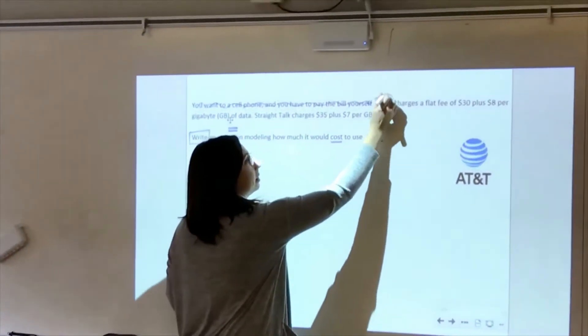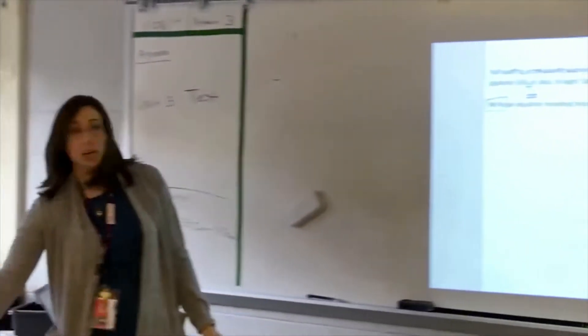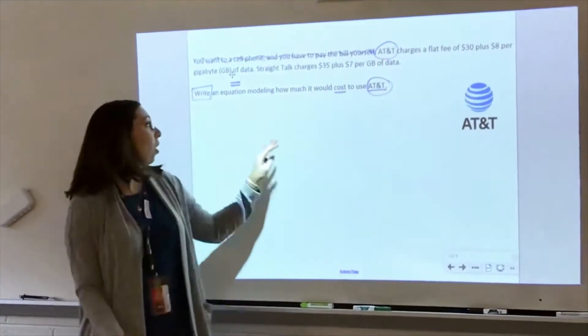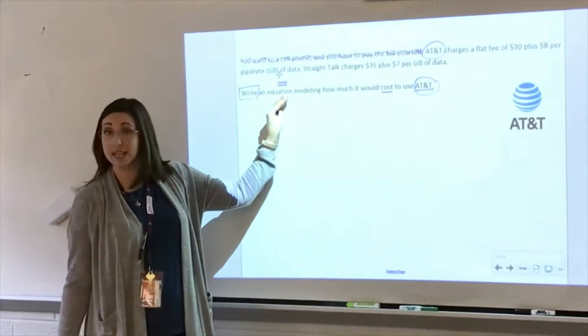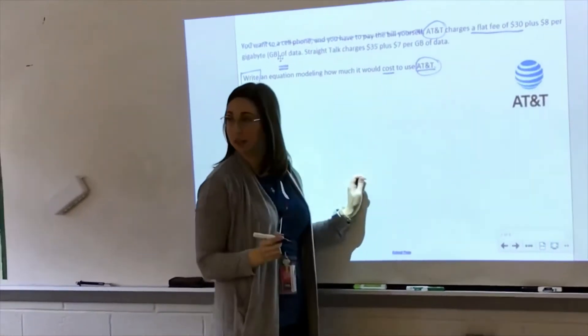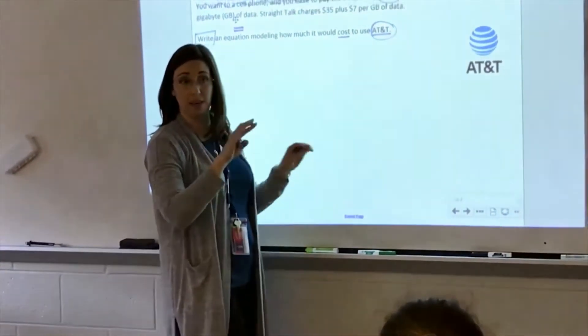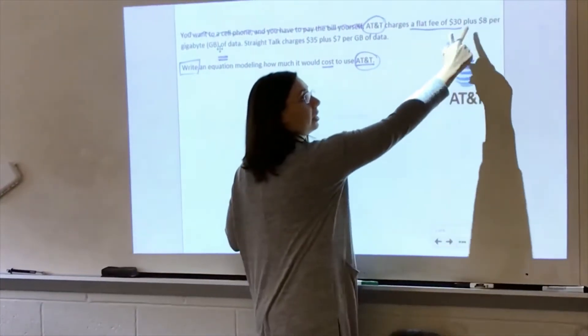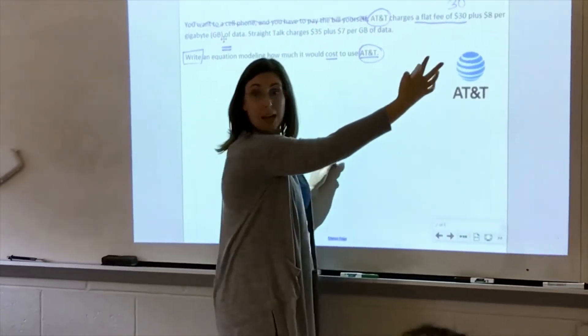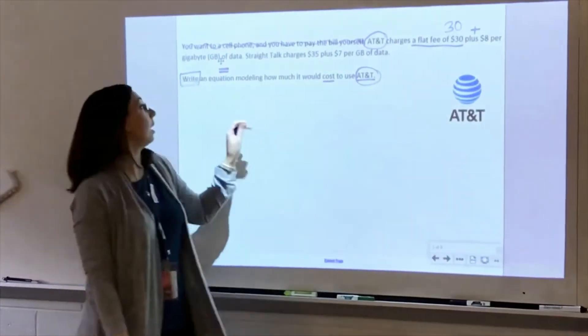Let's talk about AT&T first. So this sentence is saying that AT&T charges $30 plus $8 per gigabyte. If my goal is to write an equation, let's translate. What does it mean when it says a flat fee of $30? How many times am I paying that? Once - flat fee, one and done. So I'm paying $30. How would I translate this word, just plus, right?